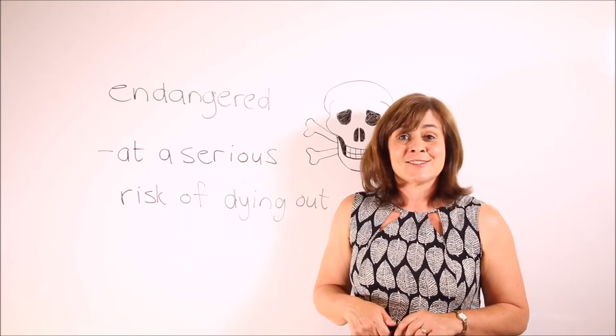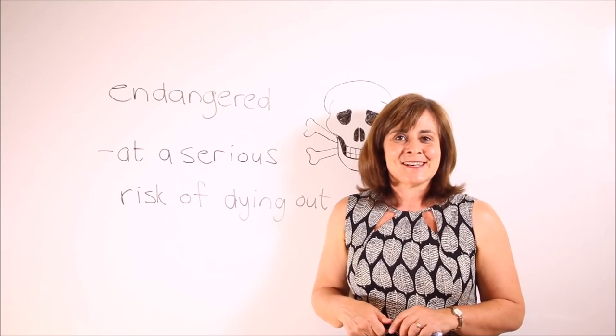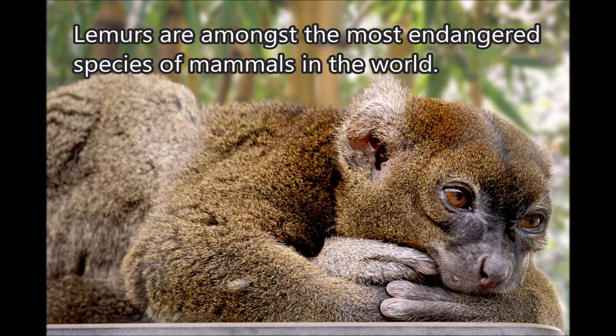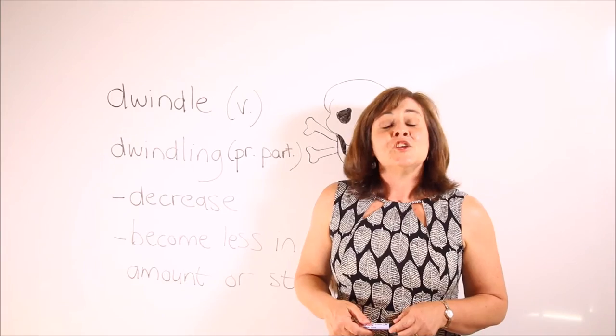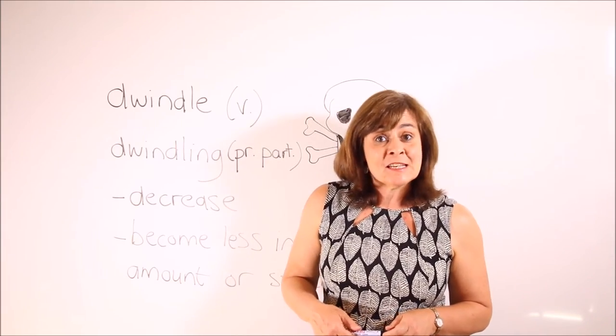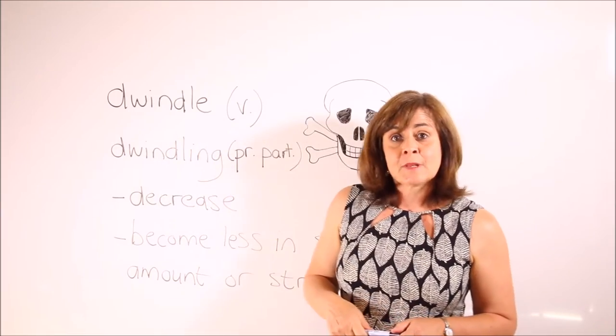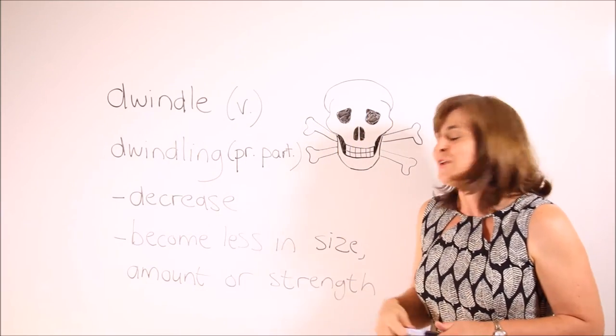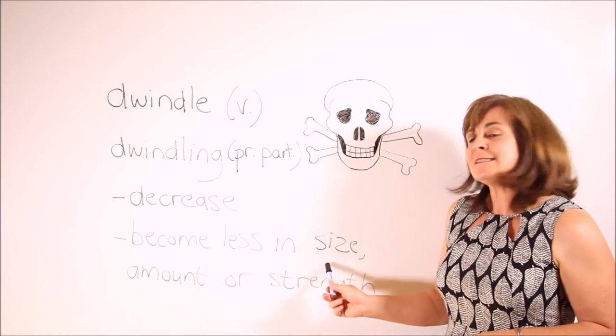Here is a sample sentence: lemurs are amongst the most endangered species of mammals in the world. Usually the numbers of an endangered species dwindle. To dwindle means to decrease, to become less in size, amount, or strength.